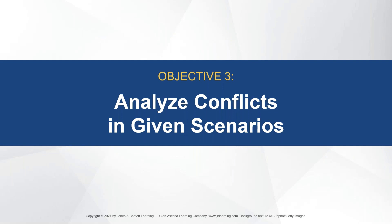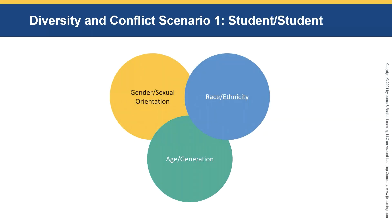Objective three: we're going to give you some conflicts in given scenarios like mini case studies. We're going to talk about a gender and sexual orientation, race, ethnicity, and age and generation conflict — because all these diversity issues can overlap each other.